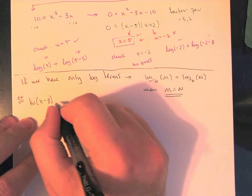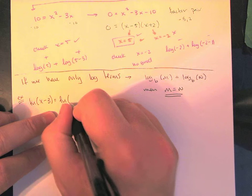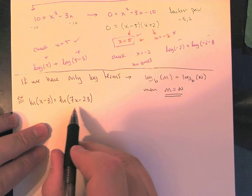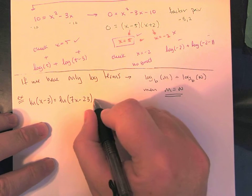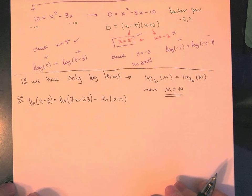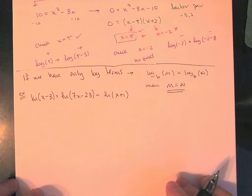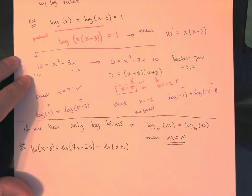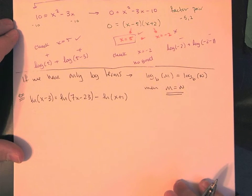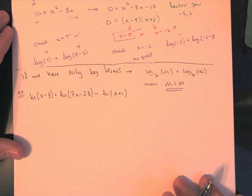Let's do one last example that's a little longer, using the natural log. It doesn't really matter what type of log we use since we're not raising any values to e. The equation is: natural log of x minus 3 equals natural log of 7x minus 23, minus natural log of x plus 1. There's a lot of moving pieces. We need to do the same kind of thing as before — combine log terms together using log rules. Here we have log equals log minus log.